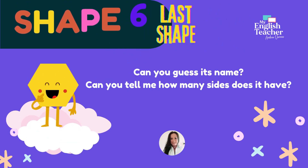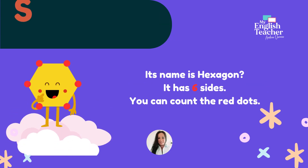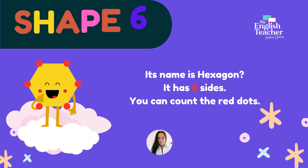This is the last shape. Can you guess his name? Can you tell me how many sides does he have? Take your time. Alright, let's find out. His name is Hexagon. He has six sides. You can count the red dots.